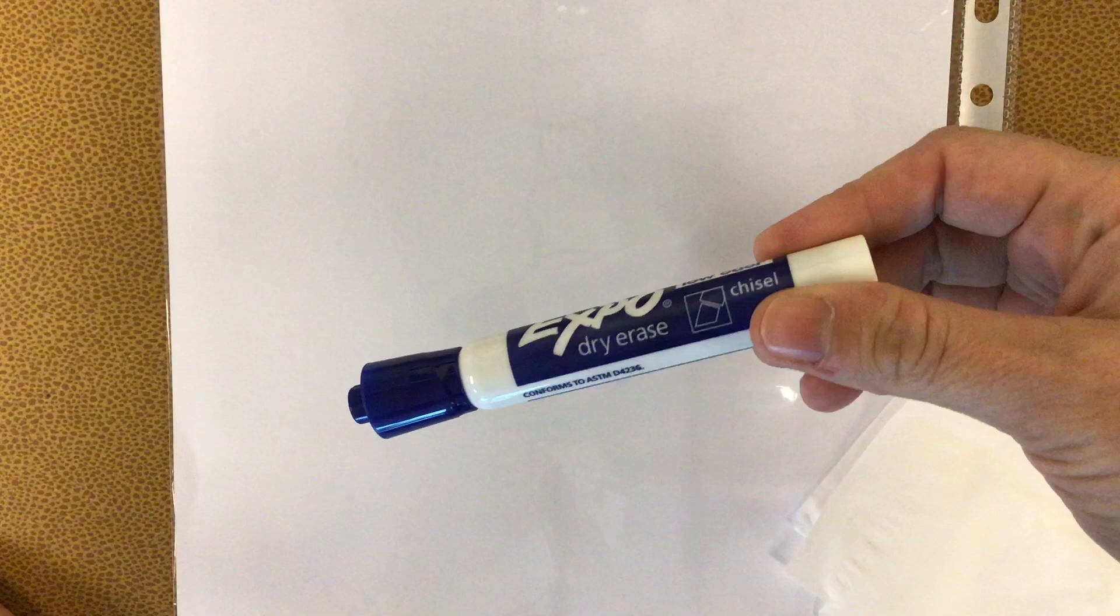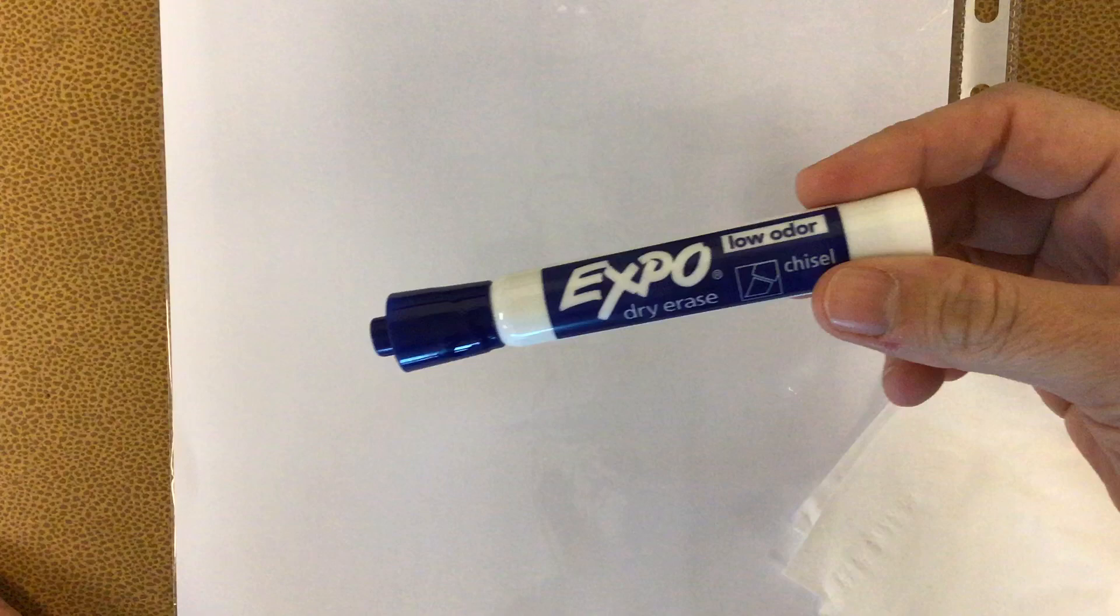You should have all received one of these. You have a marker, a dry erase marker like this, and this is a special marker. It does not write on regular paper. It writes on a whiteboard, and if you don't have a whiteboard, you should have a piece of paper that's inside this plastic sleeve like this, and I want you to use that as your whiteboard.